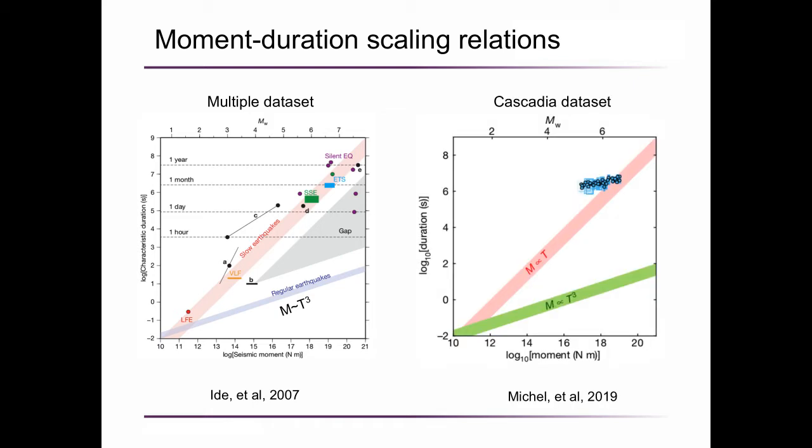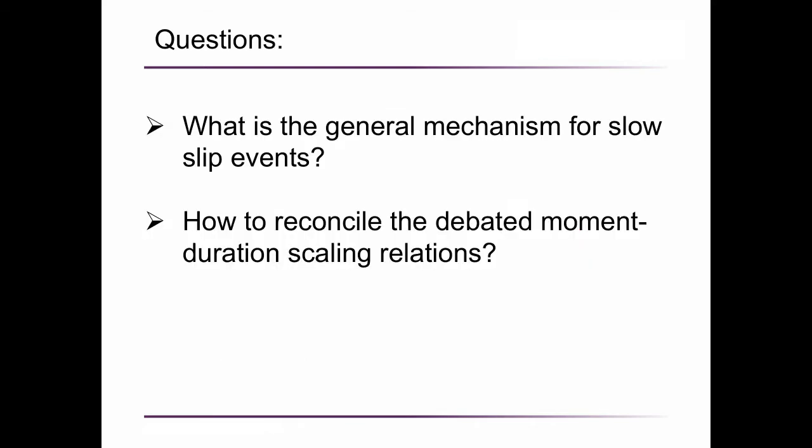But in recent studies that focused on slow slip events in a particular environment, they found that the moment duration is near cubic. So they suggest the physical mechanism of slow slip events is similar to regular earthquakes. In this debate, the main difference is that they use different data sets. The most recent papers consider a particular environment such as the Cascadia subduction zone, while the earlier papers include multiple data sets. So here the question is why does the moment duration scaling depend on the data set? Here I am going to answer these two general questions.